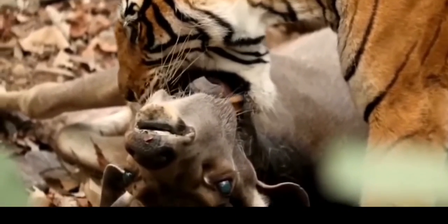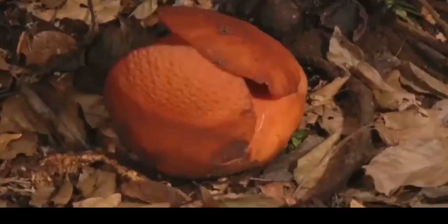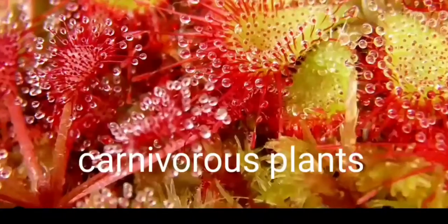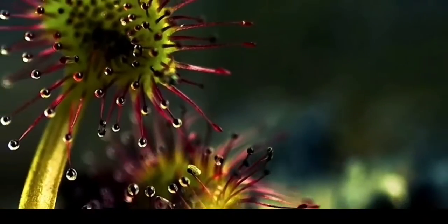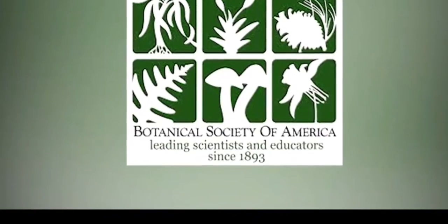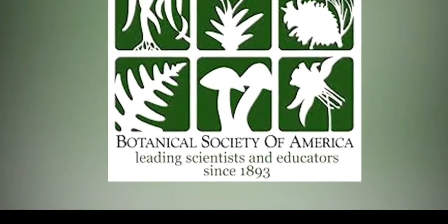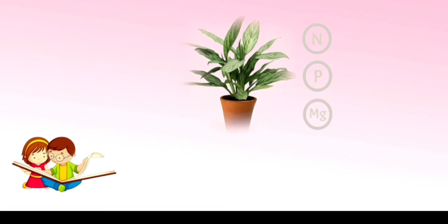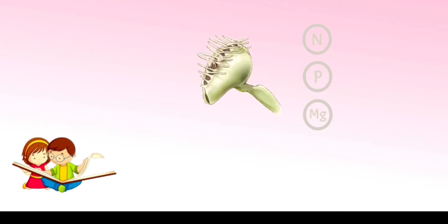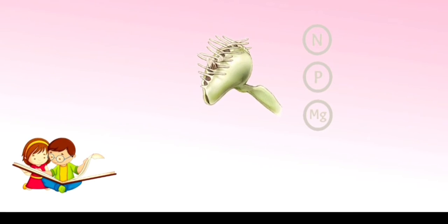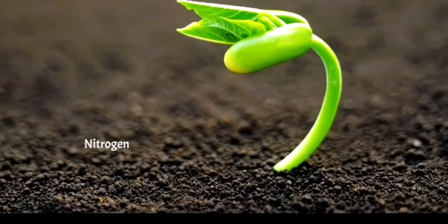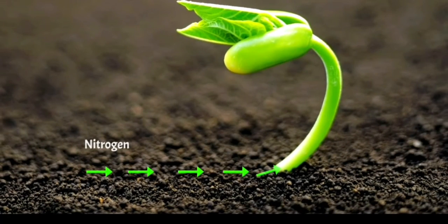Let's talk about carnivorous plants. There are more than 600 species of carnivorous plants according to the Botanical Society of America. These plants get at least some of their nutrients by trapping and digesting insects, and sometimes even small frogs and mammals. While most plants absorb nitrogen from the soil through their roots,